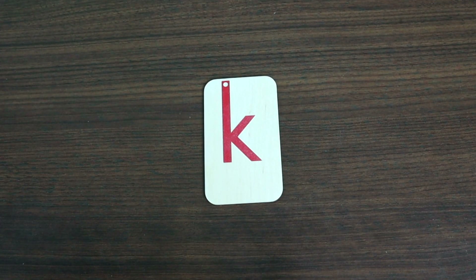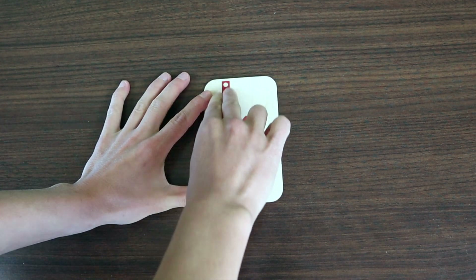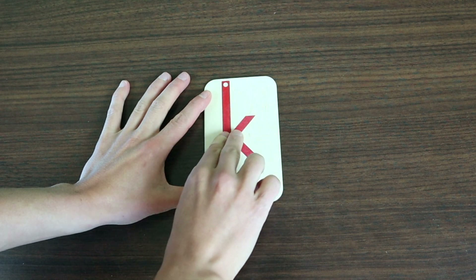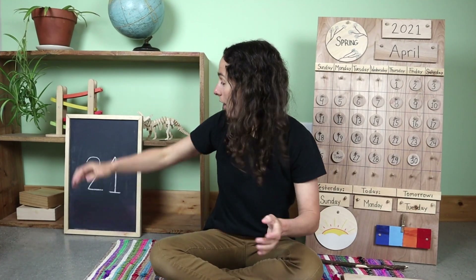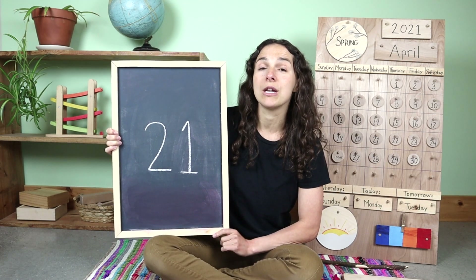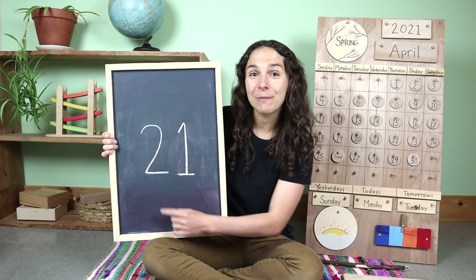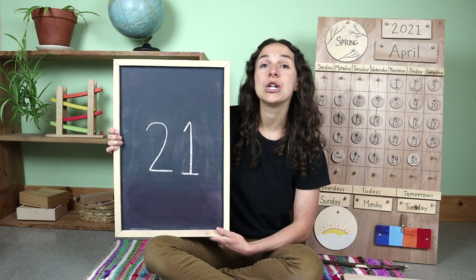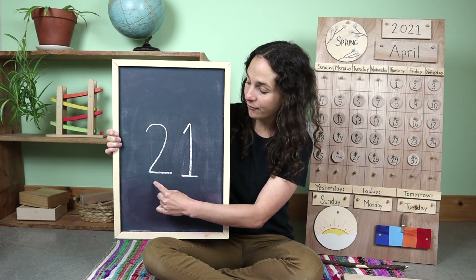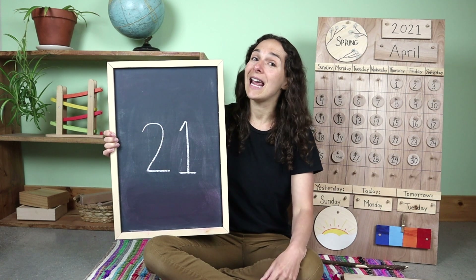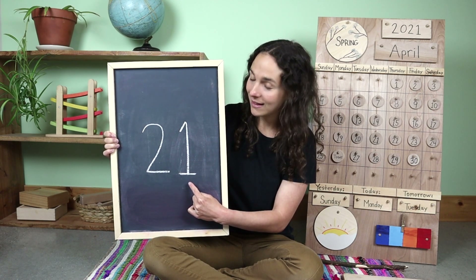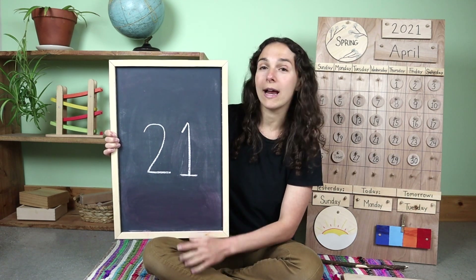This is how you write a lowercase k. We also have a new number to talk about this week. Last week our double digit numbers began with a new number — the number two. Friends, this double digit number is 21. When you write this double digit number, you write two numbers. Can you show me with your fingers what number you write first? Two. That's right. And after you write the number two, you write this number — twenty-one.